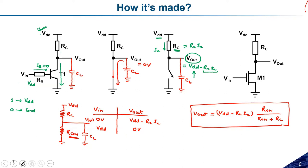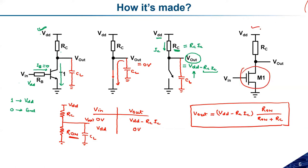This BJT-based inverter can also be implemented using a MOSFET. Since the input resistance of FETs and MOSFETs is very high, we don't need to place any base resistance — direct logic levels can be applied. As a homework assignment, analyze the MOSFET circuit to determine whether it also acts as an inverter. The important takeaway from this slide is understanding how logic circuits look and how we can convert logic levels using transistors as the fundamental building block of digital electronics.